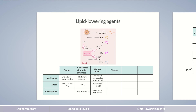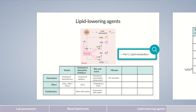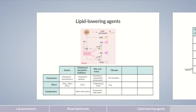Fibrates intervene in lipid metabolism by increasing the activity of lipoprotein lipase — the enzyme introduced in the first part of this Chalk Talk series that cleaves triglycerides in chylomicrons and lipoproteins to release fatty acids. Therefore, fibrates lower the concentration of triglycerides and are mainly used in hypertriglyceridemia. Fibrates don't exert consistent effects on cholesterol levels. Their benefit in cardiovascular risk reduction hasn't yet been proven. Fibrates and statins are only combined in exceptional cases because this increases the risk of myopathy.